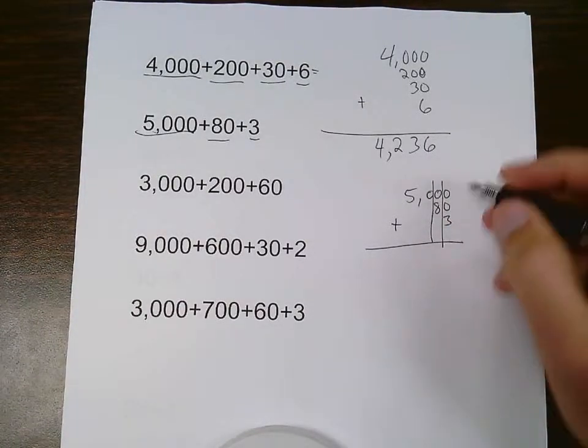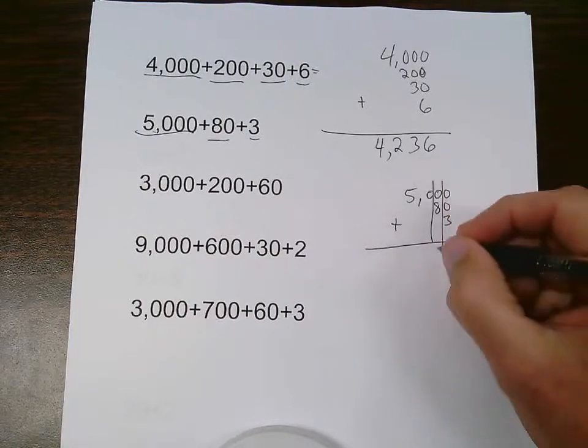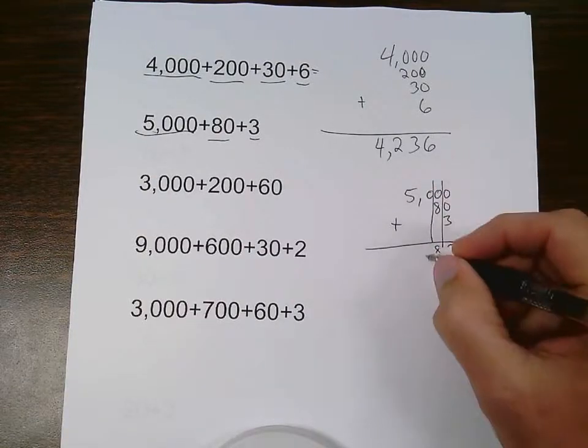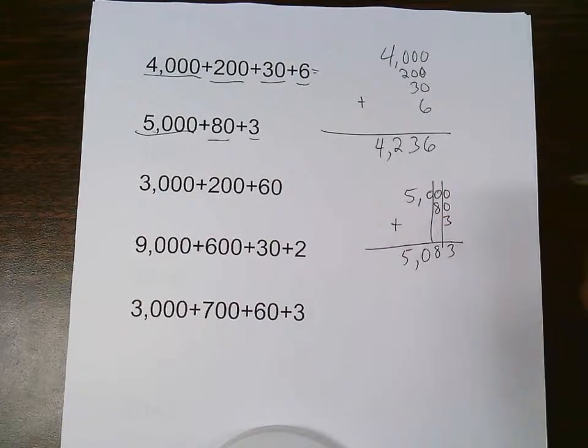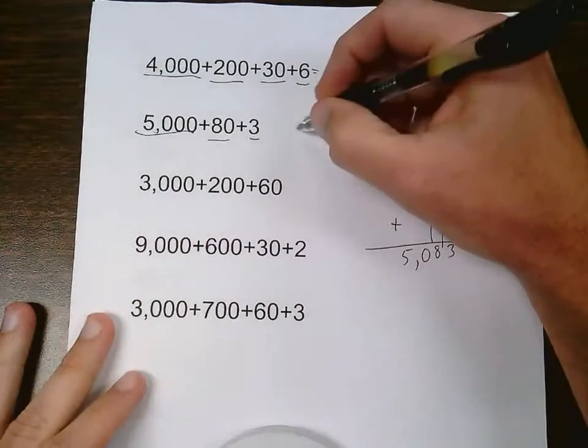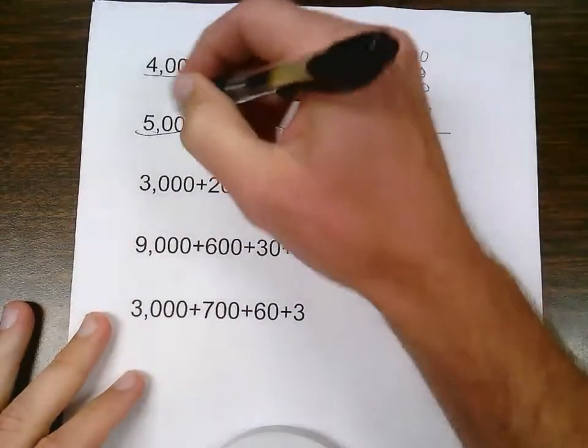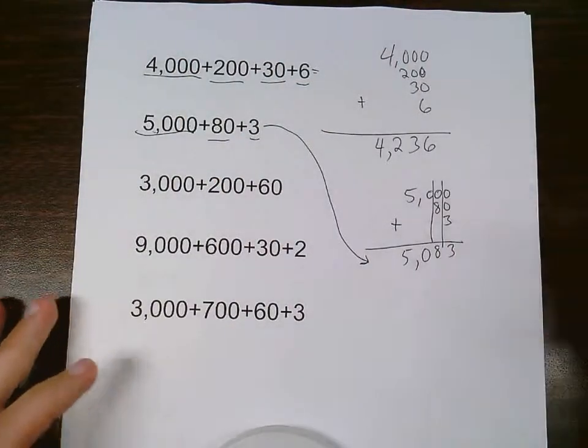So, 3 plus 0 plus 0 is 3. 0 plus 8 is 8. 0 plus 0, 0 plus nothing is 0. Bring down my comma, and 5. So, the standard form of this expanded form number is 5,083.